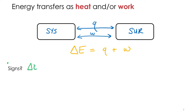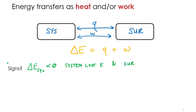So, change in energy for the system — what if it is negative? What's that mean? The surroundings gained energy. The system lost energy. You can say it a couple of different ways: the system is transferring energy to the surroundings, the surroundings are gaining energy, the system is losing energy. So the system lost energy and the surroundings gained energy — it has to go together.